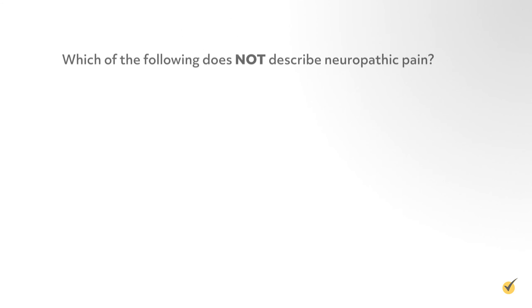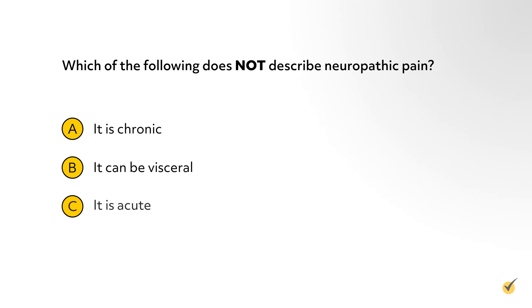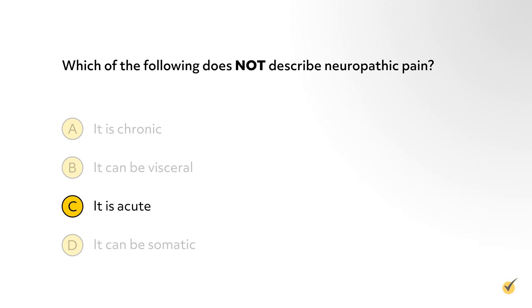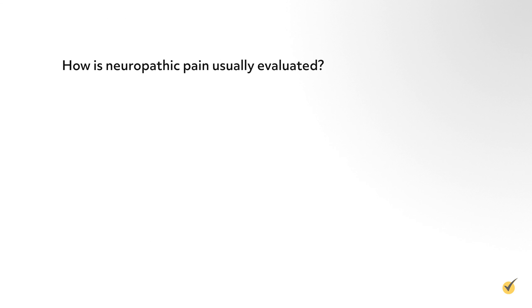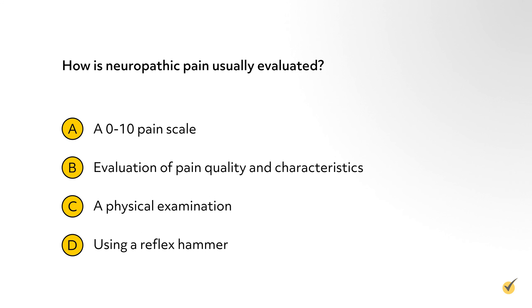Before we go, let's look at a couple of review questions. Number one: which of the following does not describe neuropathic pain? A) it's chronic, B) it can be visceral, C) it is acute, D) it can be somatic. Number two: how is neuropathic pain usually evaluated? A) a 0 to 10 pain scale, B) evaluation of pain quality and characteristics, C) a physical examination, D) using a reflex hammer.